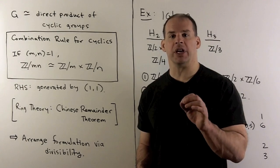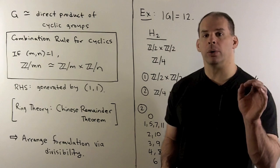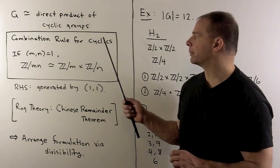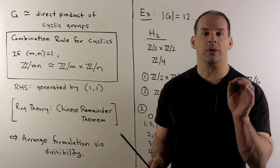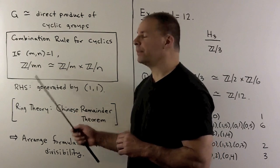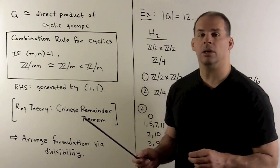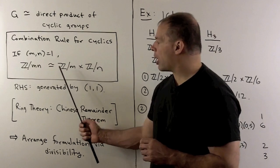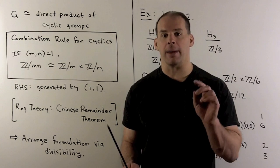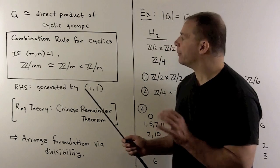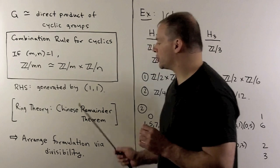Now that we can write our finite abelian G as a direct product of finite cyclic groups, all that's left is bookkeeping. For that, we note the combination rule for cyclic groups — we've seen this before. If we have M and N, integers greater than one and relatively prime, then Z mod MN is isomorphic to the direct product of Z mod M and Z mod N. We note the element (1,1) on the right-hand side is a generator, so it's a cyclic group with order MN. This is the start of a bigger story — we save that for ring theory where it's called the Chinese Remainder Theorem.